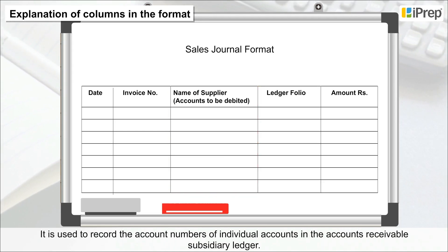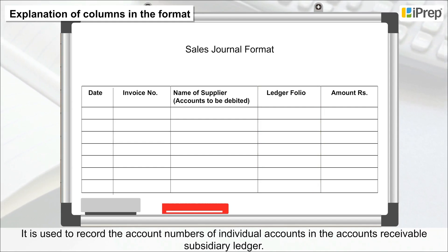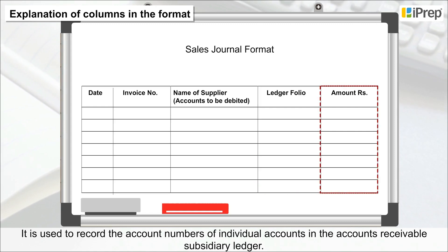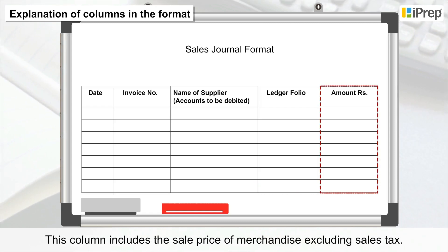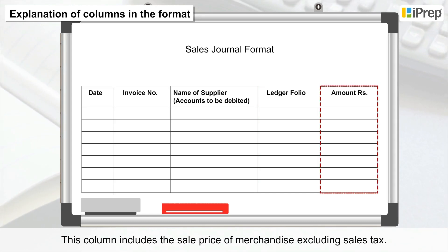4. Ledger Folio — it is used to record the account numbers of individual accounts in the accounts receivable subsidiary ledger. 5. Amount — this column includes the sale price of merchandise excluding sales tax.